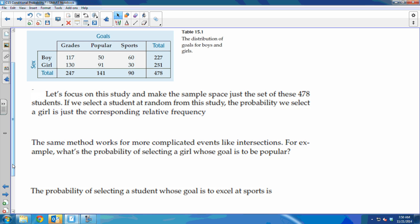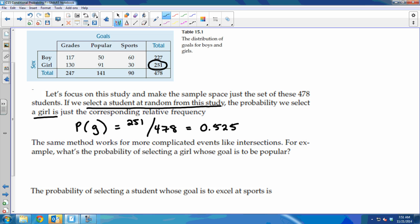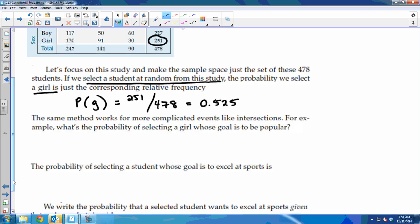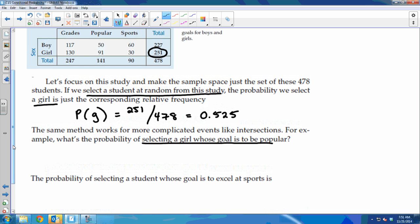So you guys can do all of these. These are not hard. I won't do all of them, I'll just do one to make sure we know what we're talking about. For example, if we select a student at random from the study, the probability we select a girl, well, you find the total number of girls and then you divide by the total number of people. And then it works for more complicated events. So what's the probability of selecting a girl whose goal is to be popular? Girl and popular, well, there's 91 girls that want to be popular out of everybody.